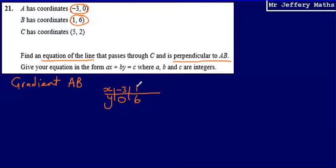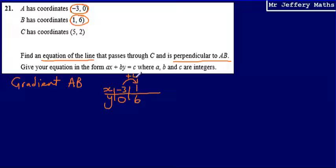To work out the gradient between these two coordinates, let's first define how we think about gradient. The gradient of a straight line is the amount that the Y coordinate changes by as the X coordinate increases by 1. The problem here is that the X coordinate is not increasing by 1 — it's increasing by 4.